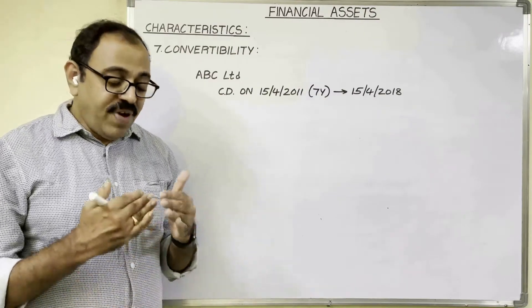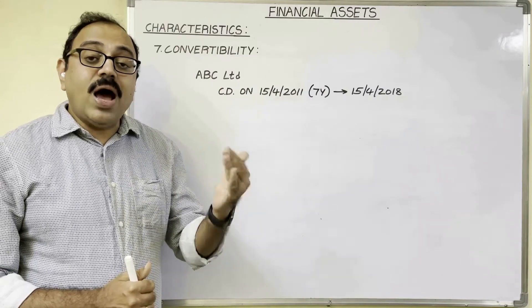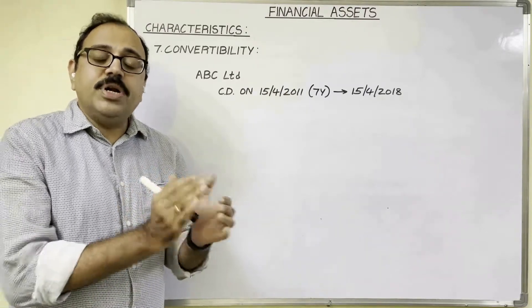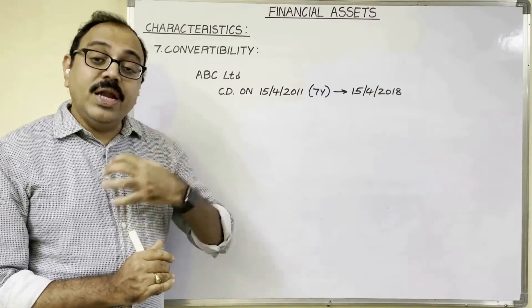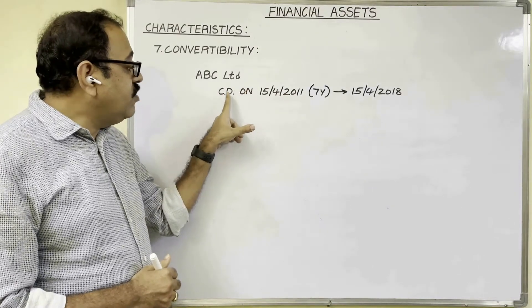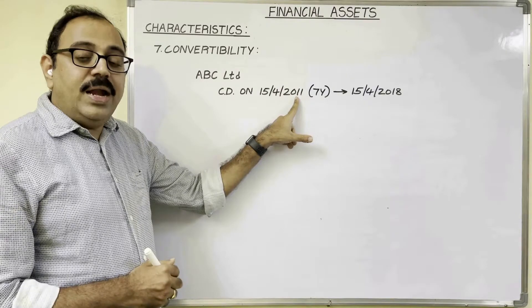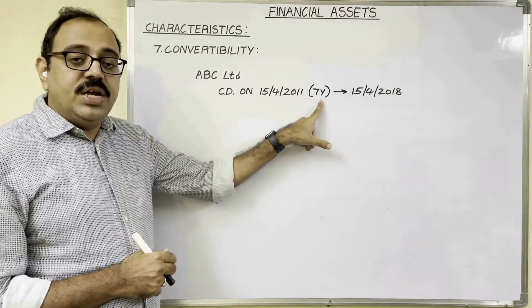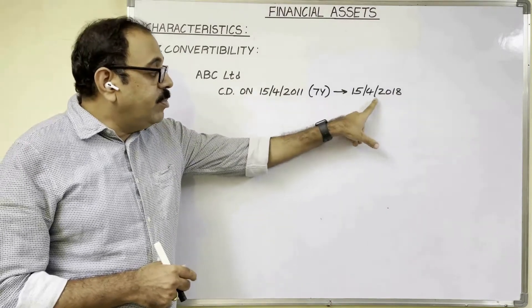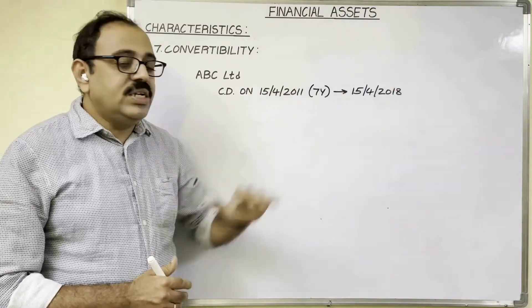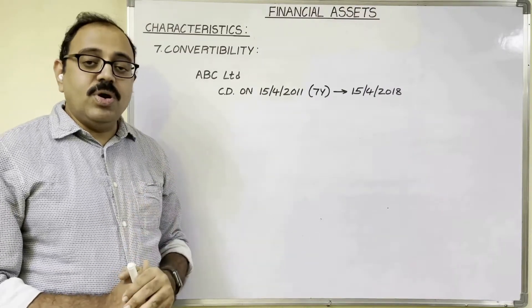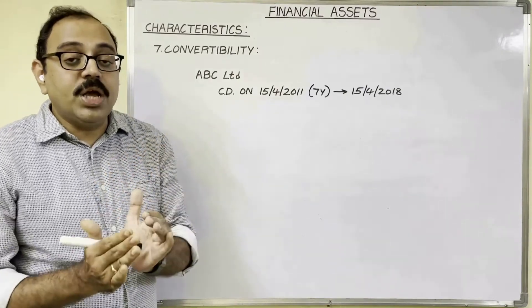The seventh feature is convertibility. Some financial assets can be converted into another class of financial asset. For example, convertible preference shares or convertible debentures can be converted into equity shares after a particular period. ABC Limited issued convertible debentures on 15th April 2011, and mentioned on the debenture document that after 7 years — i.e., from 15th April 2018 — the debenture holder can convert them into equity shares. After conversion, the holder is treated as an equity shareholder and all equity share rules apply.